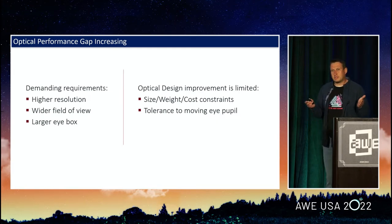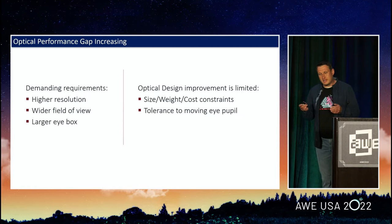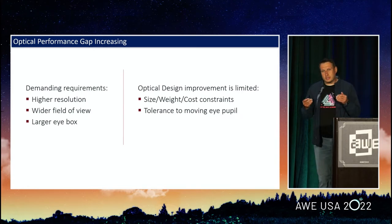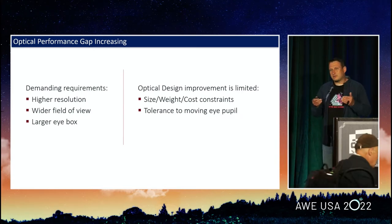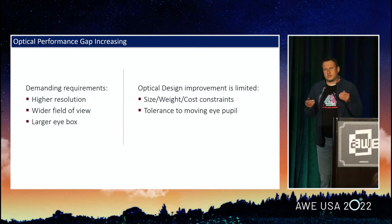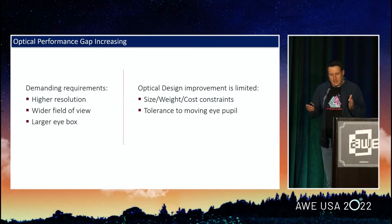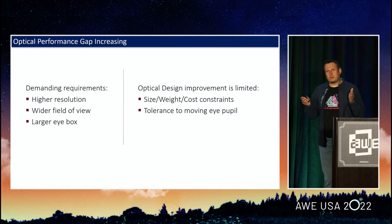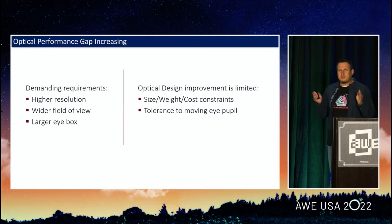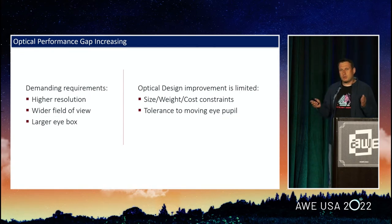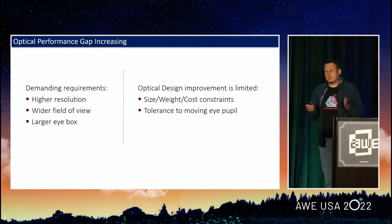We don't want it to be more expensive. Actually, those constraints are growing because we want lighter, smaller, slimmer devices. That gap — that unbridged optical performance gap, the difference between what is displayed and what you see — is growing and becomes apparent.